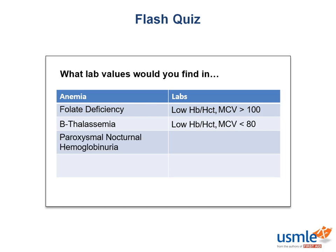Next up, paroxysmal nocturnal hemoglobinuria. This would have a low hemoglobin, a low hematocrit, a normal MCV of 80 to 100, and a high reticulocyte index greater than 2%. So how would you categorize this? That's right — it's an intrinsic hemolytic normocytic anemia. I know that's a mouthful, but it's good review.